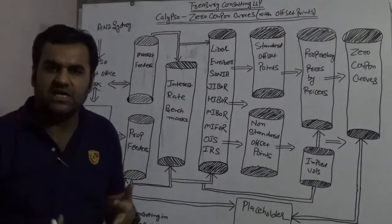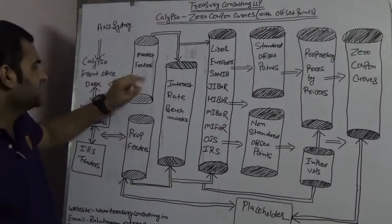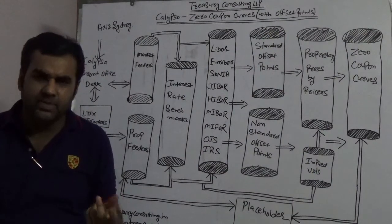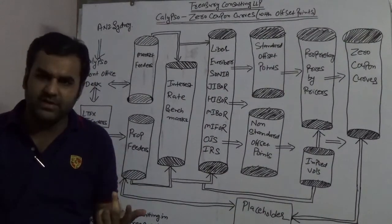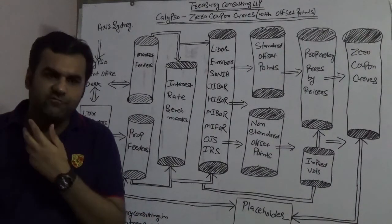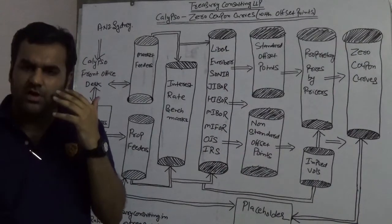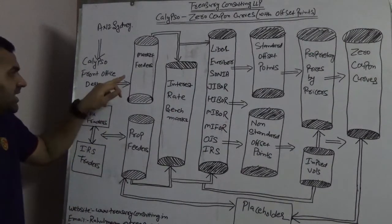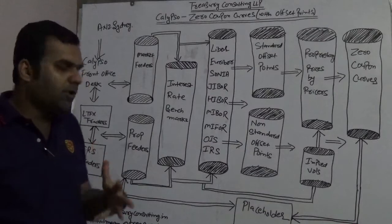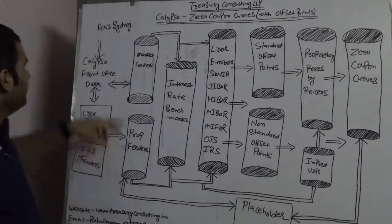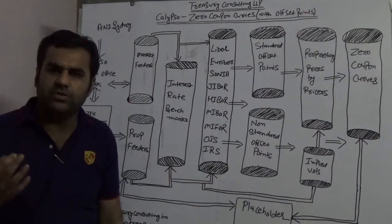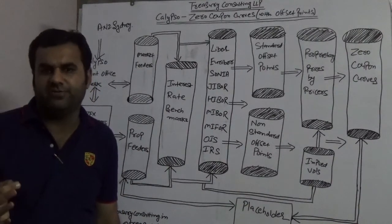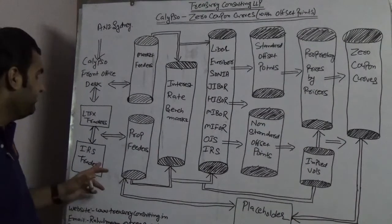There are two kinds of feeders linked with Calypso. One is market feeders, which could be Thomson Reuters, Bloomberg, TeleTrader, MetaData, MetaTrader 4, WebTrader, or ICAP — there are a lot of feeders in the market. The second is prop feeders, meaning proprietary feeders created by ANZ Sydney. Whether it is Murex, Calypso, or a different TMS, all have different feeders and everyone also has a proprietary feeder.